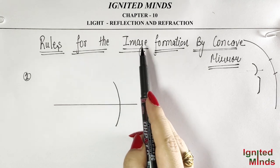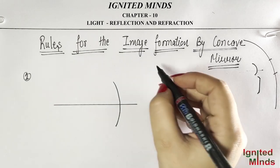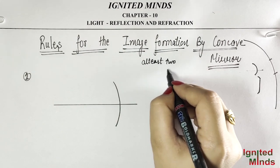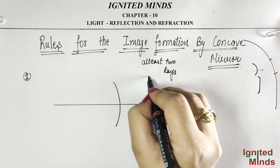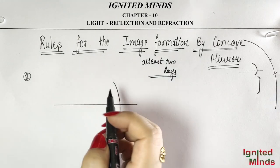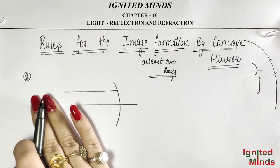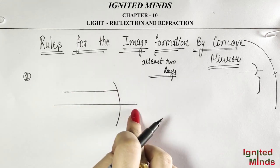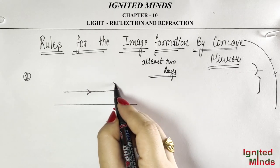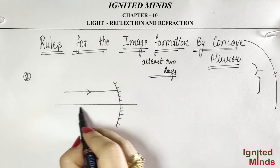So the first rule is to make an image, and we have already discussed how the image forms — when at least two rays are meeting.